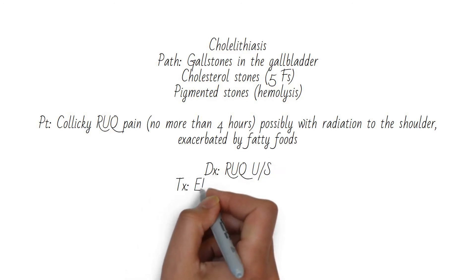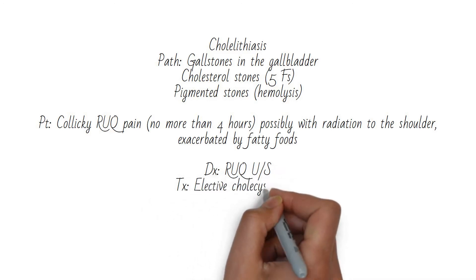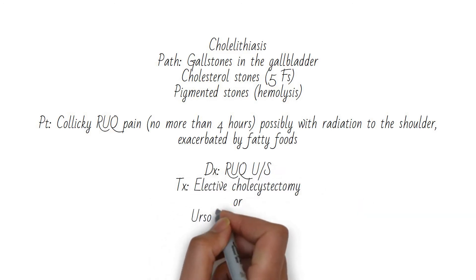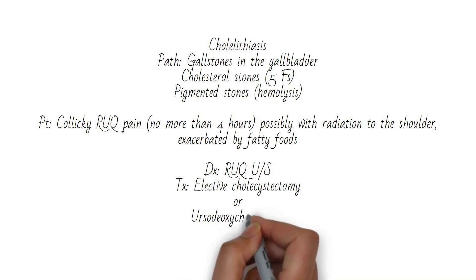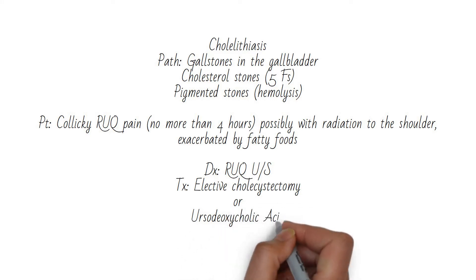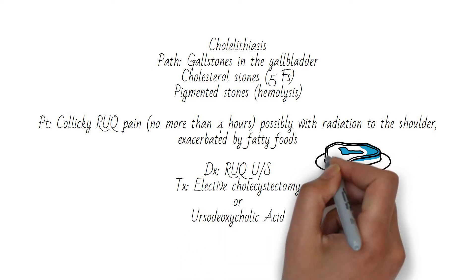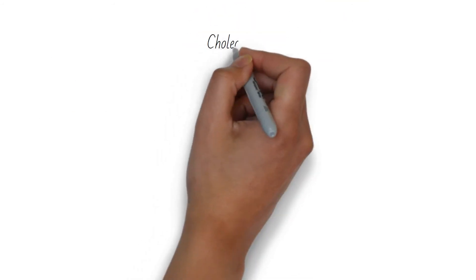Diagnosis is made by right upper quadrant ultrasound showing stones in the gallbladder, and treatment is by elective cholecystectomy. Non-surgical candidates may have some relief with ursodeoxycholic acid.